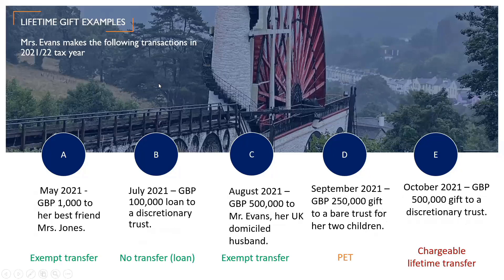Running through the answers. Question A: in May 2021, Mrs. Evans makes a gift of £1,000 to her best friend — that would be an exempt transfer, because it falls within the £3,000 annual exemption, assuming she hasn't already used it. Question B: a loan of £100,000 to a discretionary trust — a little tricky because this was a loan, not a gift. There was no loss to the estate, as the loan could be recalled at any time. So the answer is D — no transfer. Question C: a £500,000 gift to her UK domiciled husband — that's an exempt transfer to spouse. Question D: a gift to a bare trust — that would be a potentially exempt transfer, as it exceeds the £3,000 annual exemption. And finally, Question E: a £500,000 gift to a discretionary trust — that is a chargeable lifetime transfer, because it is a gift to a discretionary trust.